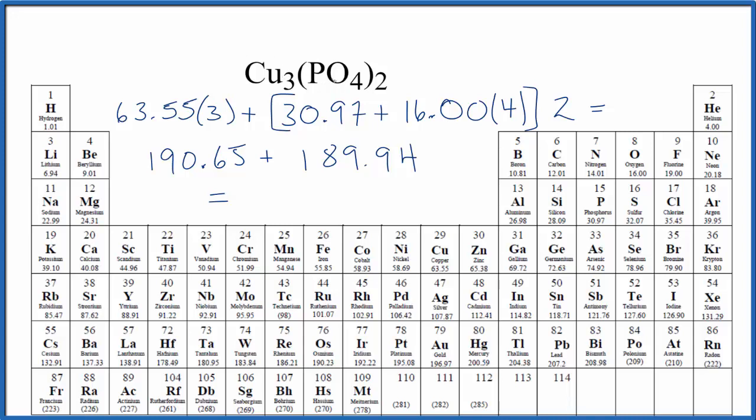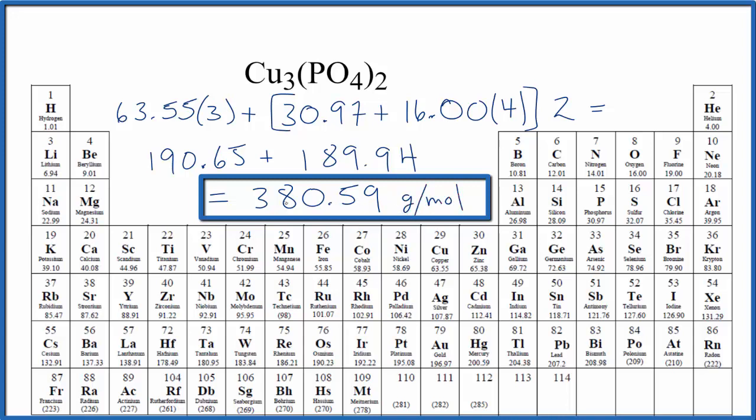So we end up with 380.59 and now the units grams per mole. So if we have 380.59 grams that'll be one mole of this copper phosphate. This is Dr. B finding the molar mass for Cu3(PO4)2. Thanks for watching.